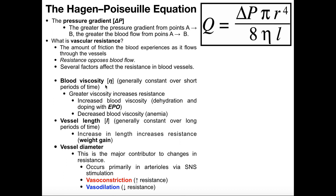One of them is blood viscosity, given by the Greek letter eta. Blood viscosity generally is constant over short periods of time — this is not something we can regulate quickly. But greater viscosity of the blood increases resistance. If you're not familiar with viscosity: water has a pretty low viscosity, but compare that to honey or molasses, which have much greater viscosity. If you pour honey out of a bottle, it moves really slowly. So by nature of a fluid like blood being more viscous, it's going to provide more resistance because it won't flow as quickly.